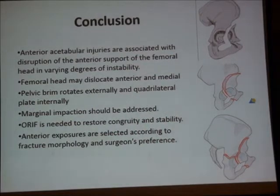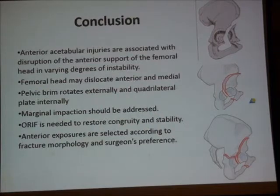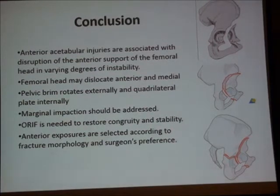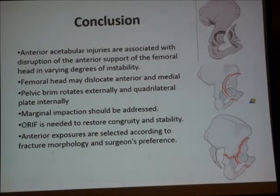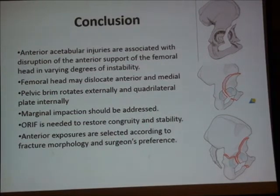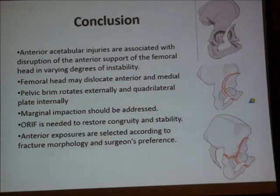In conclusion, anterior acetabular injuries are associated with disruption of the anterior support of the femoral head in varying degrees of instability. The femoral head may dislocate anteriorly and medially — the pelvic brim rotates externally, the quadrilateral plate internally, and the head is in between. Marginal impaction should be addressed. Open reduction and internal fixation is indicated to restore congruity and stability. Anterior exposures are selected according to fracture morphology and the surgeon's preference.